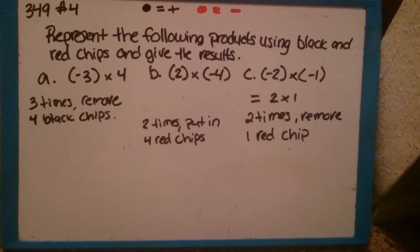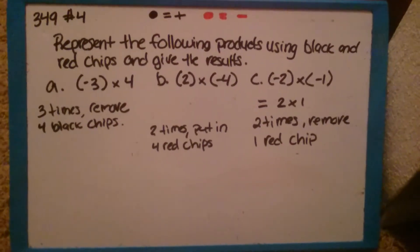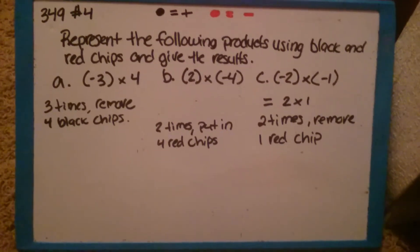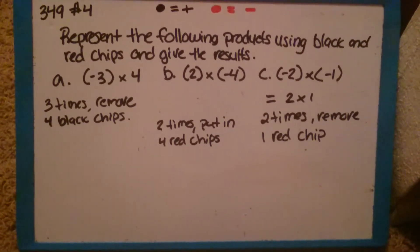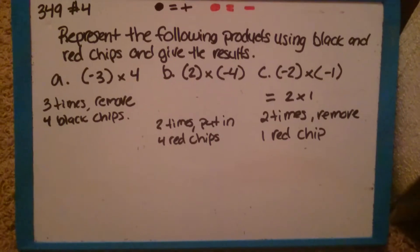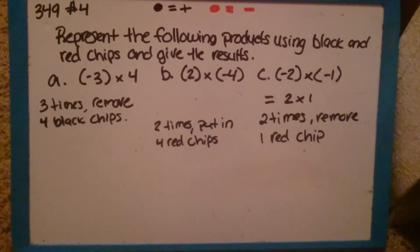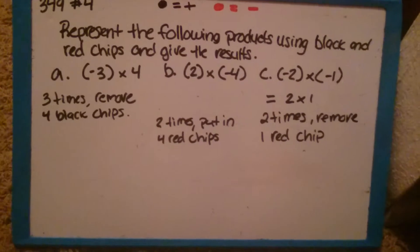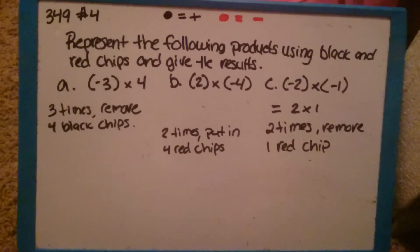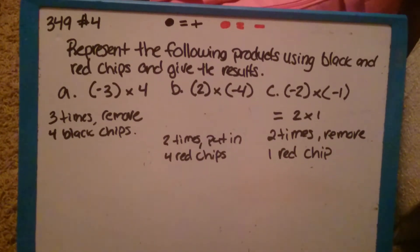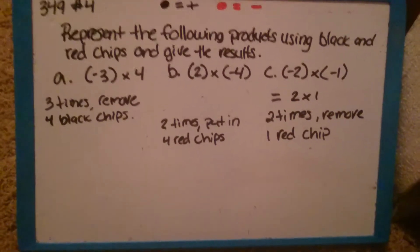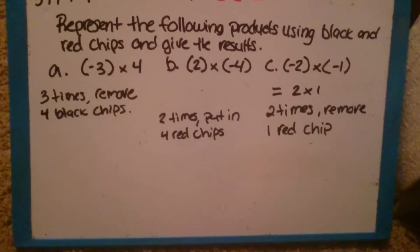Part A says for 3 times to remove 4 black chips. Since we don't have any black chips, we're going to have to add them in, but in order to do that without changing the value of the equation, we'll have to add in 0 pairs. 0 pairs are 1 black chip and 1 red chip because they cancel each other out so they equal 0, which means they won't change the value. So let's go ahead and do that.